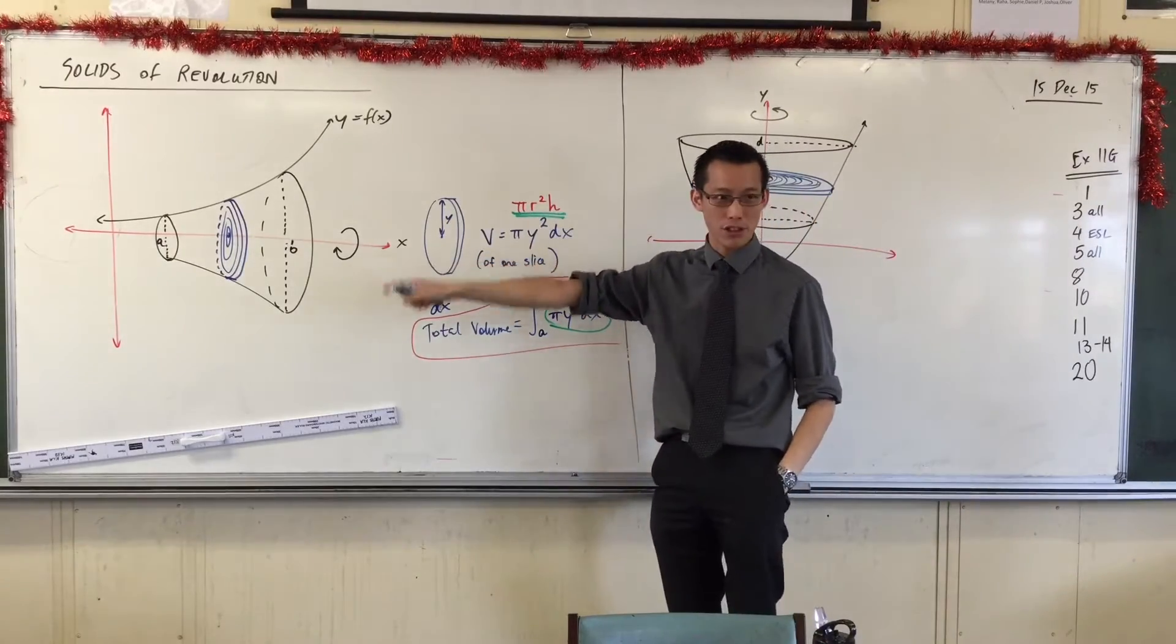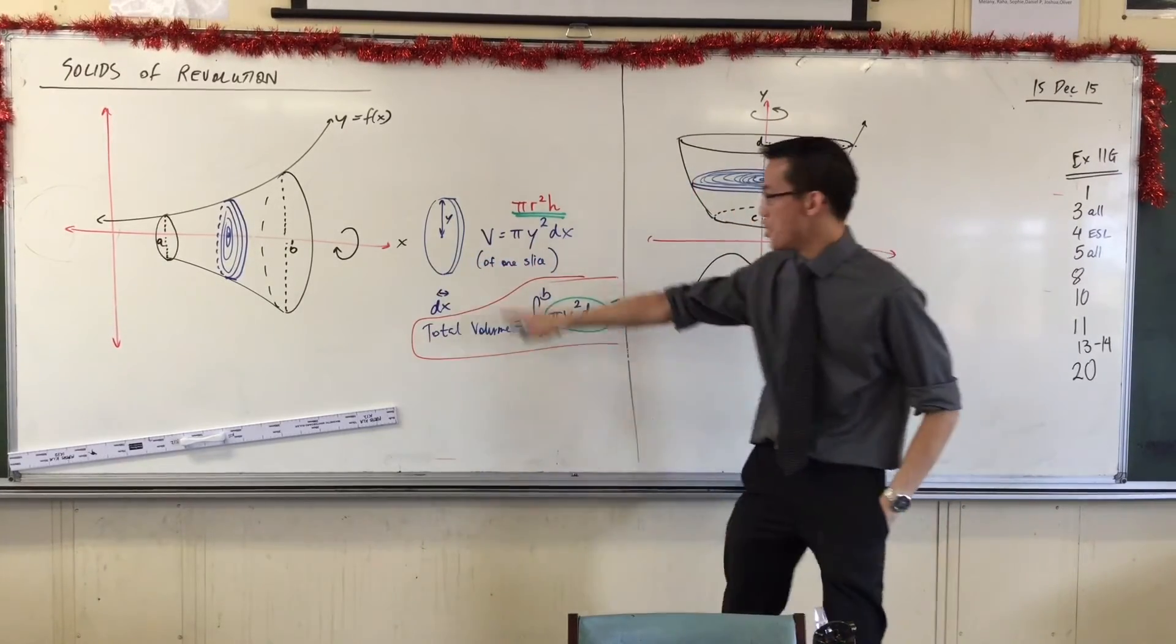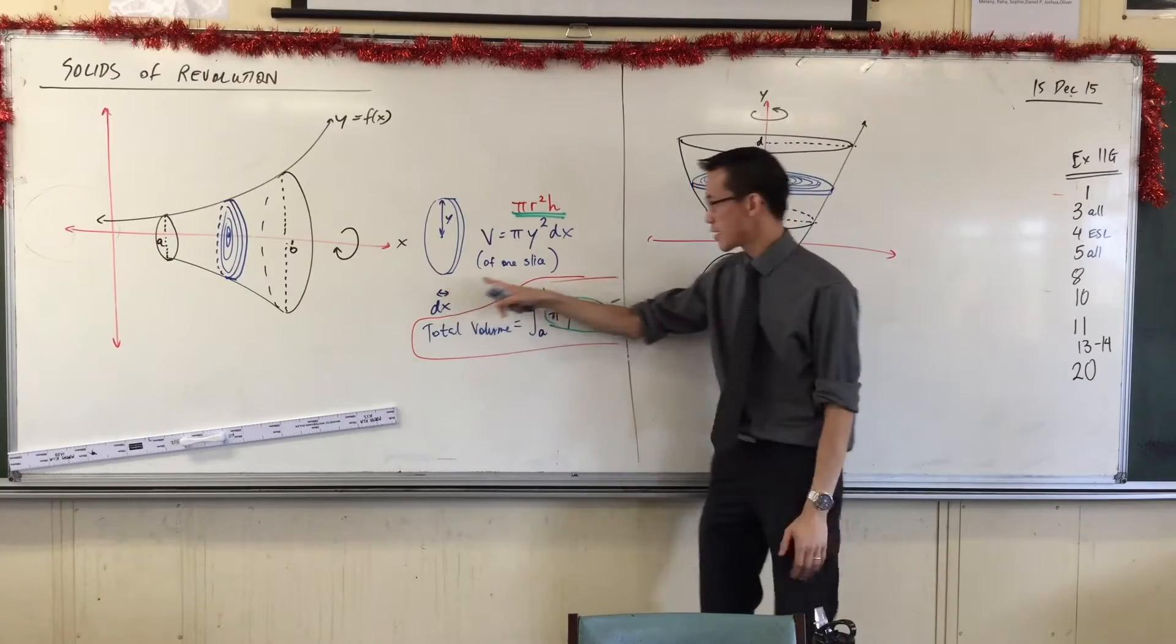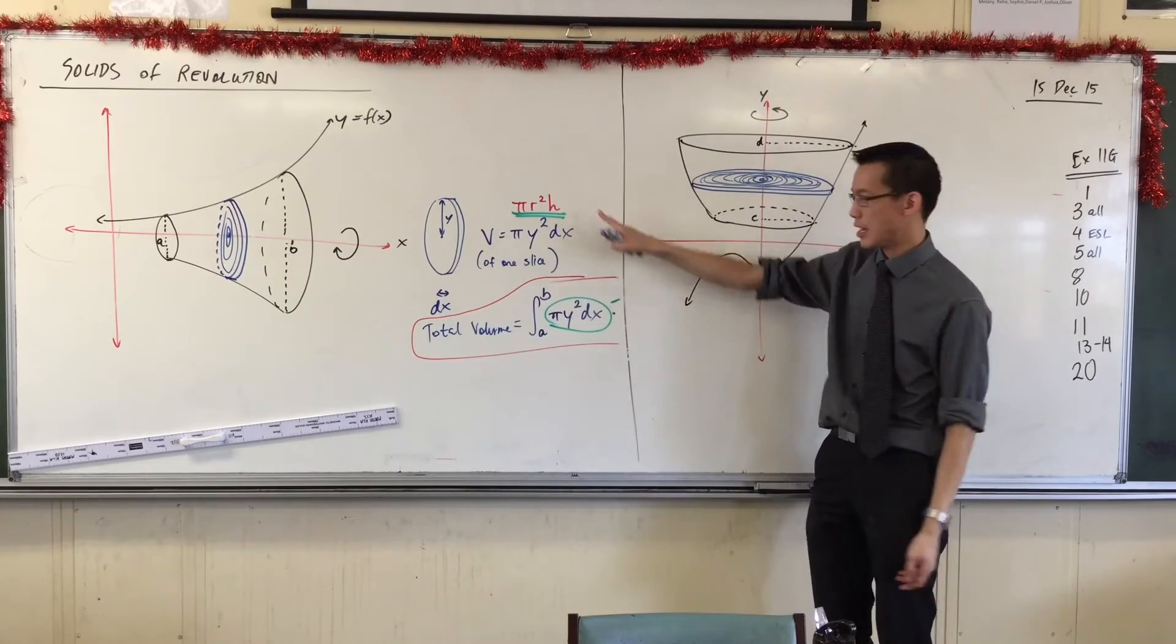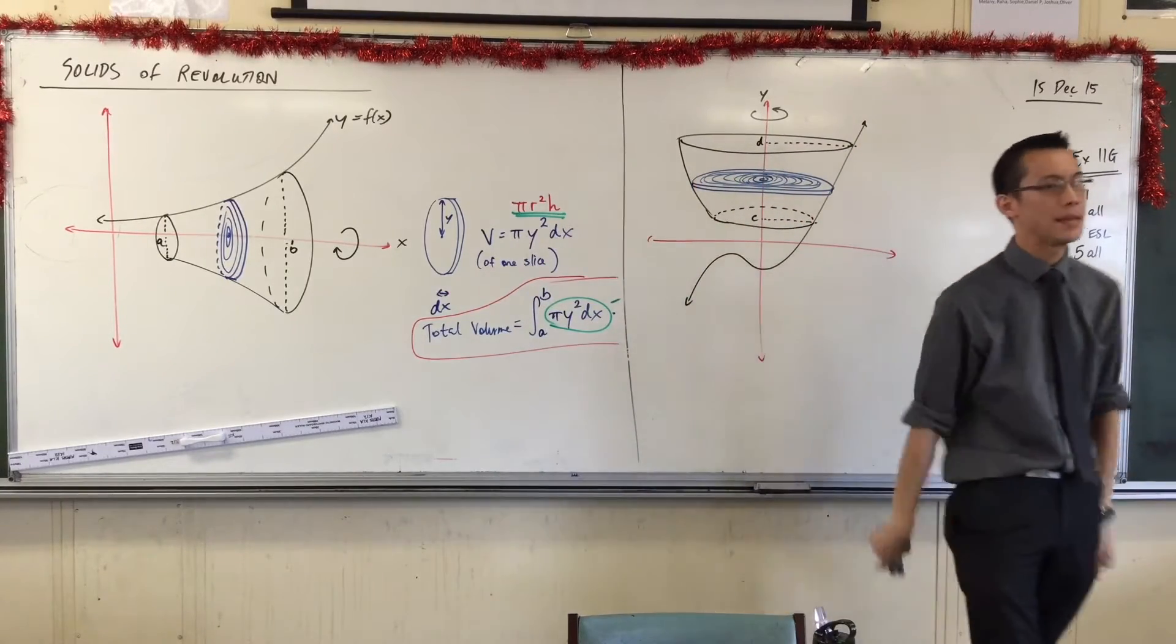If I divide up my solid of revolution, slice it up like salami, you get these guys. These cylinders. This is the volume of a cylinder, and you add up a whole bunch of them. No big deal.